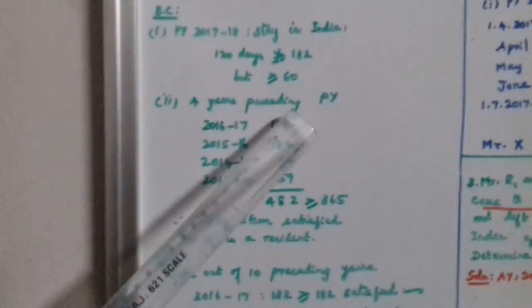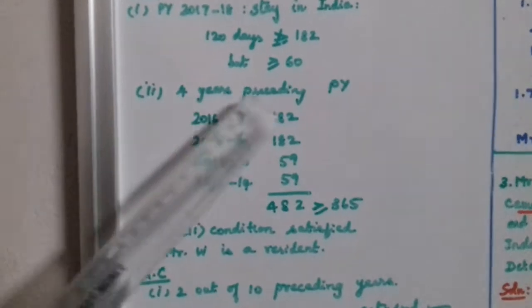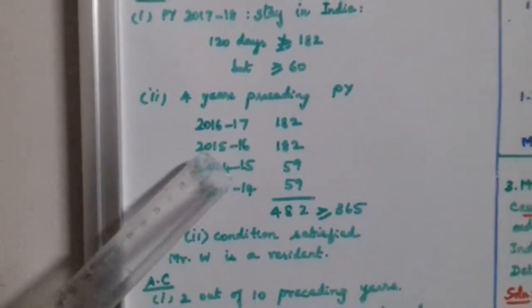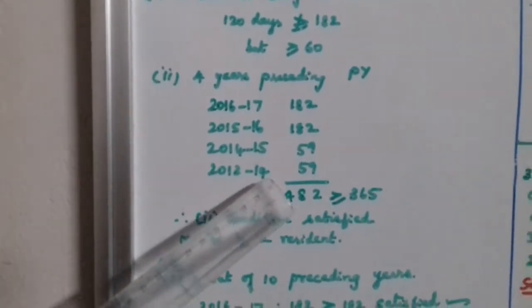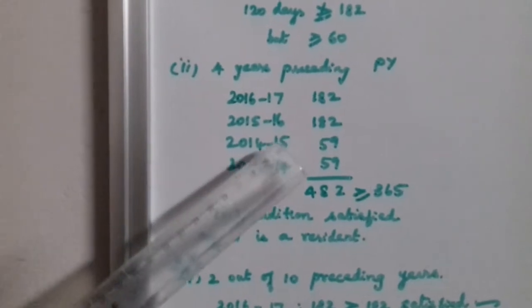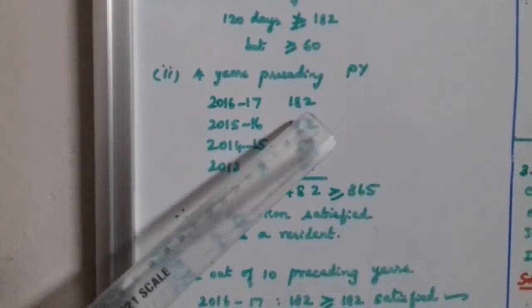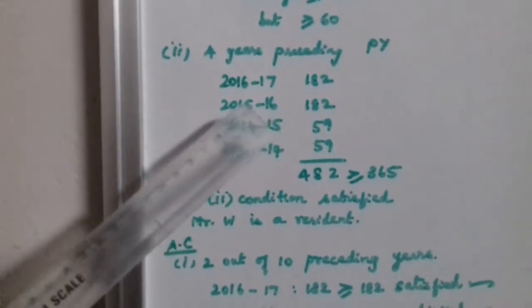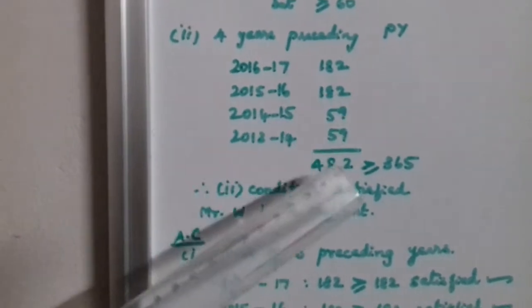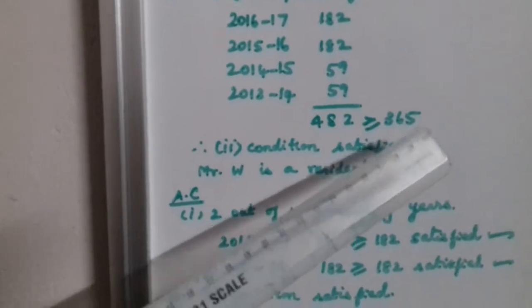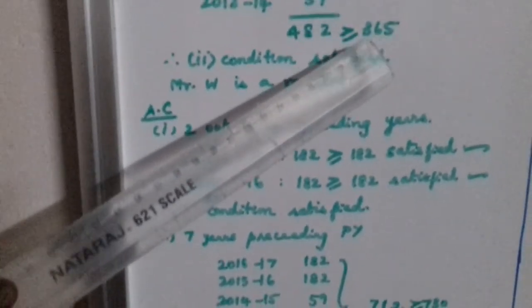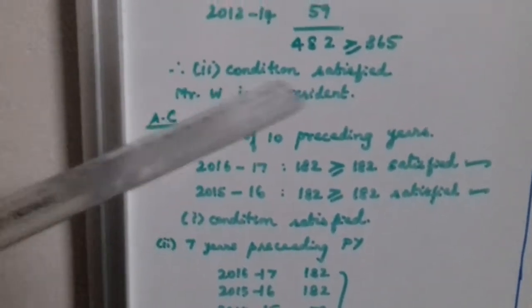Second condition: 4 years preceding the previous year. The total stay in those 4 preceding years must be greater than or equal to 365 days. The second condition is satisfied.